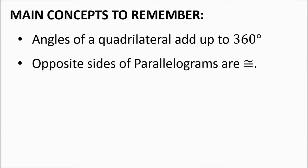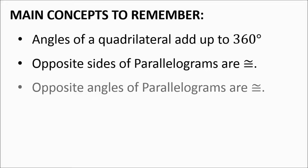Opposite sides of a parallelogram are congruent — congruent meaning having the same measurement. Any two sides opposite each other are going to be the same measurement. Opposite angles of parallelograms are also congruent; the opposite corners of a parallelogram have congruent angles.